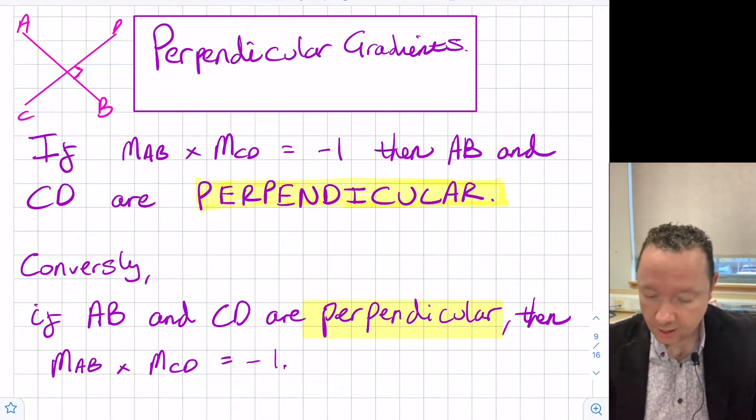Or, conversely, you can say that if you know that two lines are perpendicular, then the gradients times together to give minus one. Now, you might be wondering why is that the case?